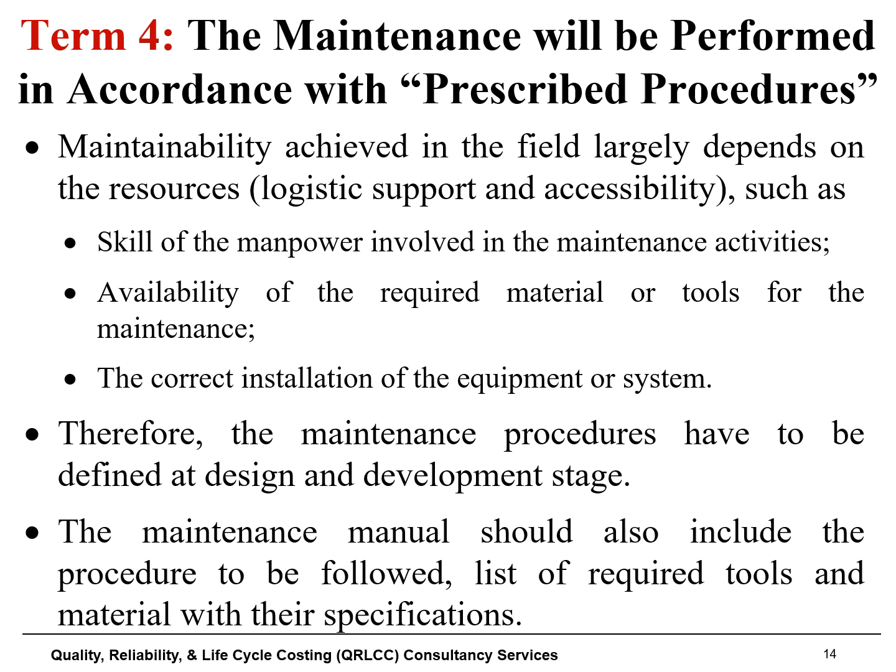Term four, the last term, states that maintenance will be performed in accordance with prescribed procedures. Maintainability achieved in the field largely depends on resources and logistic support, including the skills of the manpower involved, the availability of the required material or tools, and the correct installation of the component or system. Therefore, maintenance procedures must be defined at the design and development stage. The maintenance manual should also include the procedure to be followed and a list of required tools and materials with their specifications.